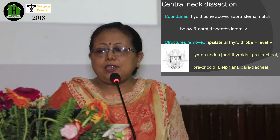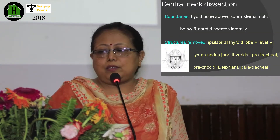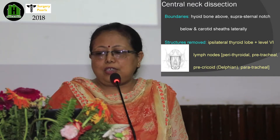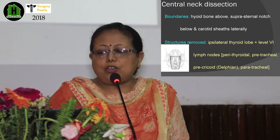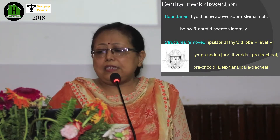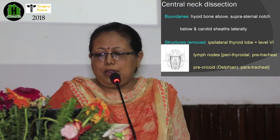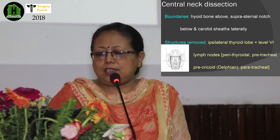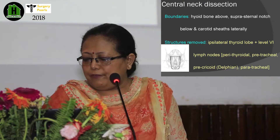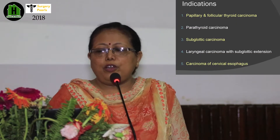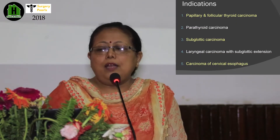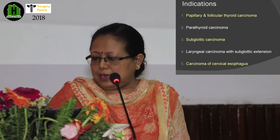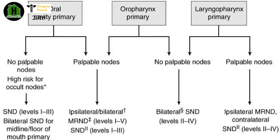Central compartment dissection covers level 6. Structures removed are the ipsilateral thyroid lobe, level 6 lymph nodes, perithyroidal, peritracheal — including Delphian — and paratracheal lymph nodes. Indications include thyroid carcinoma, parathyroid carcinoma, subglottic carcinoma, and laryngeal carcinoma.